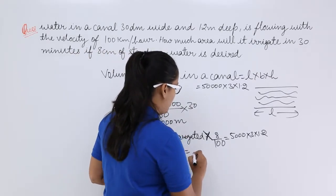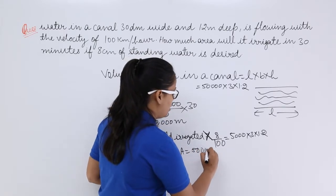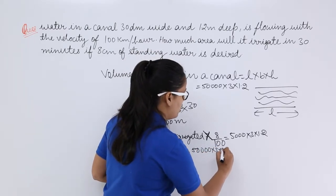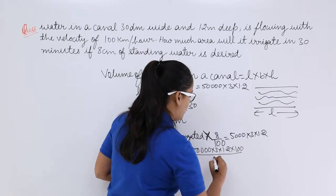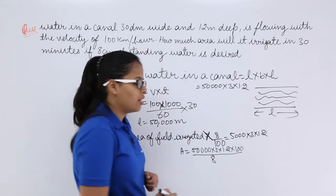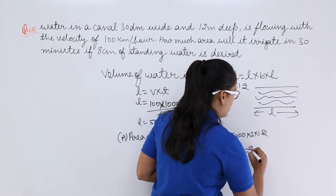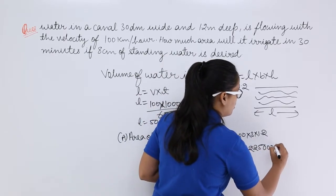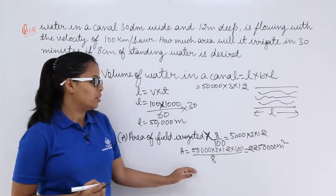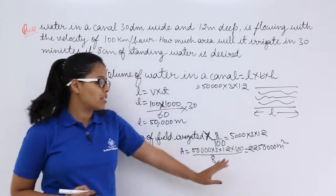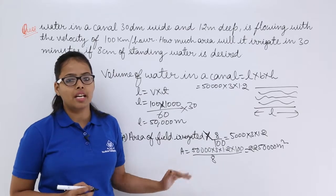So here let's suppose this is A. So what will be the value of A? This will be 50,000 into 3 into 1.2 into 100 divided by 8. After cancellation you will be getting this much square meter as the area of the field irrigated.